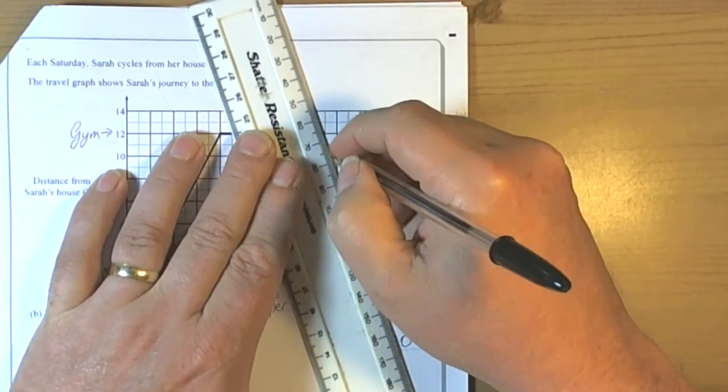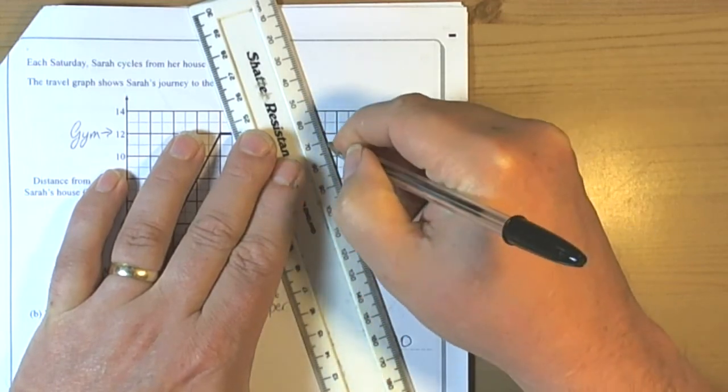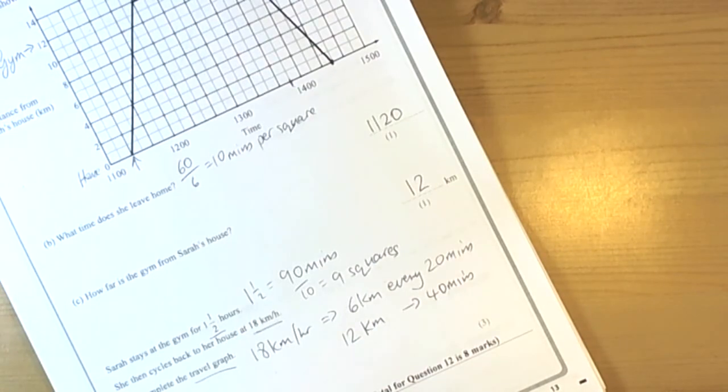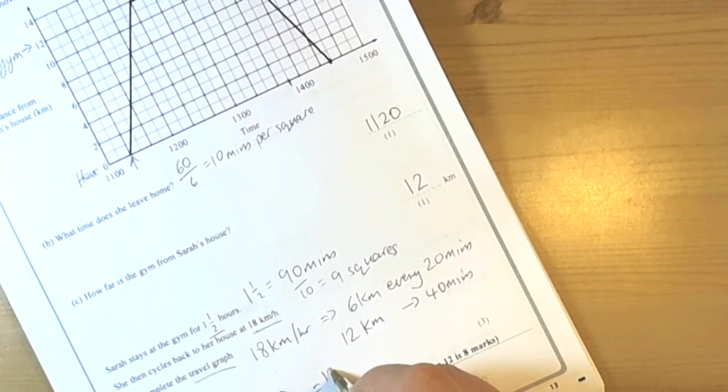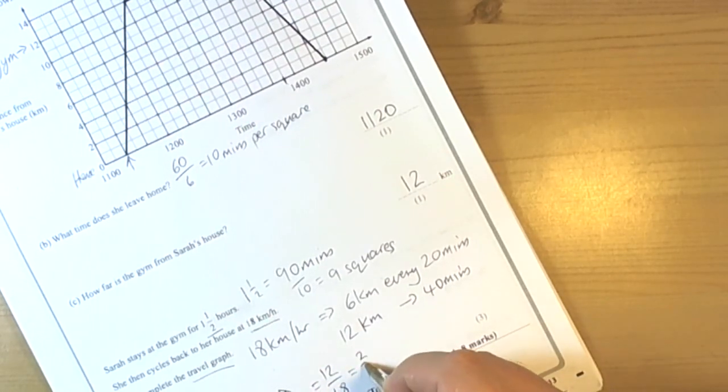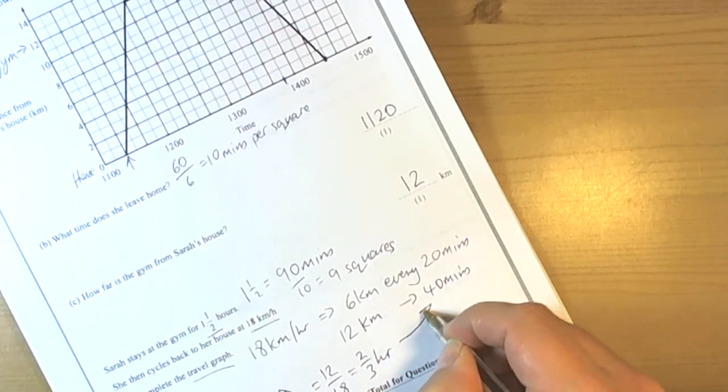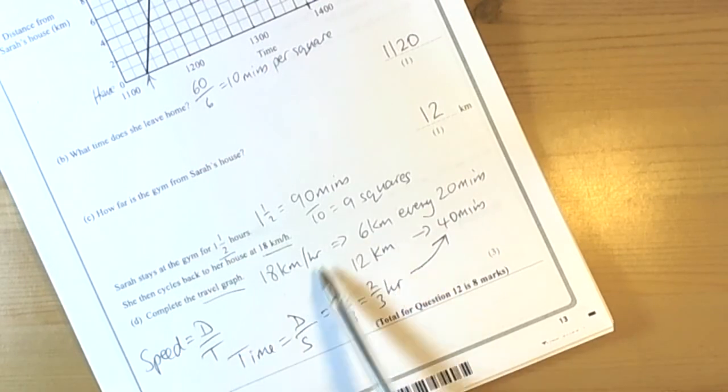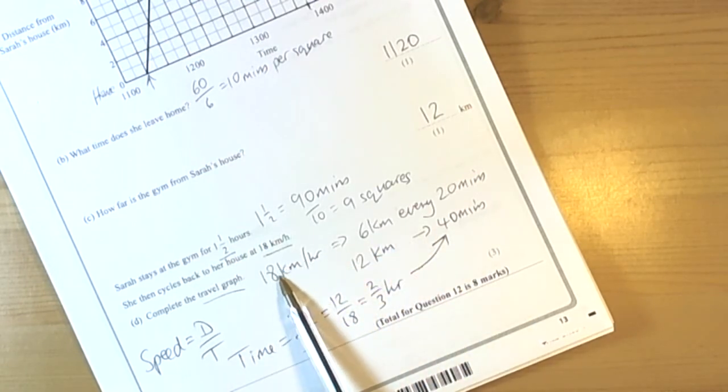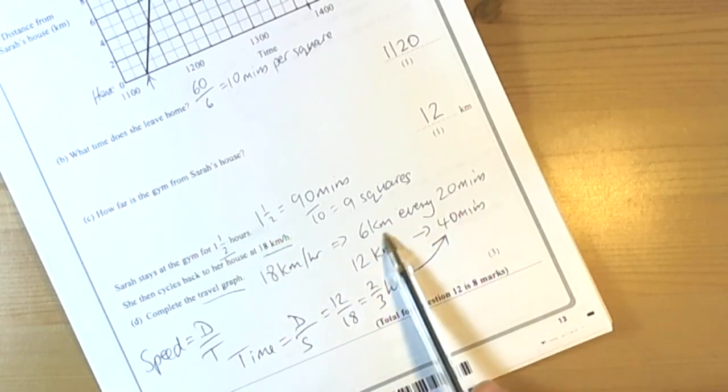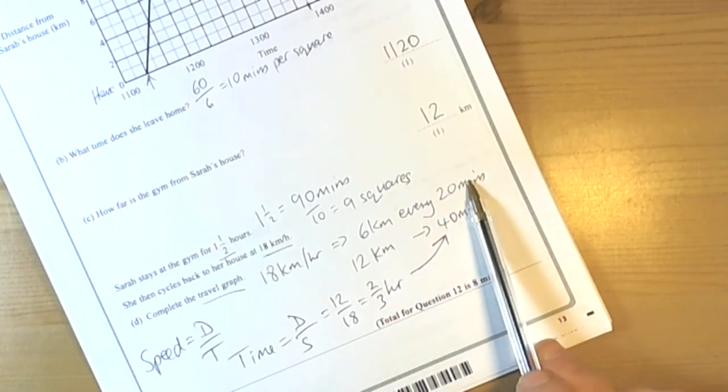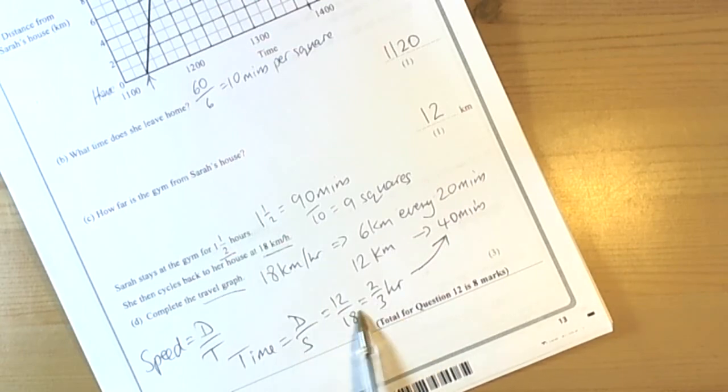So again we complete the graph accurately using our rulers. Now we could have used the formula speed equals distance over time. We could have then worked out the time as the distance divided by the speed. So we could have done 12 over 18 and that would have given us 2 thirds of an hour, which again would have led us to 40 minutes. So there are several ways for tackling this particular part of the question. Quite often at GCSE level there's usually some reasonable connection between the distances and time that you could use just breaking it down into so many 10 minutes or so many 20 minutes and so forth. Might be an easier way of doing it. But the formula would have worked just as well. So we've completed the travel graph.